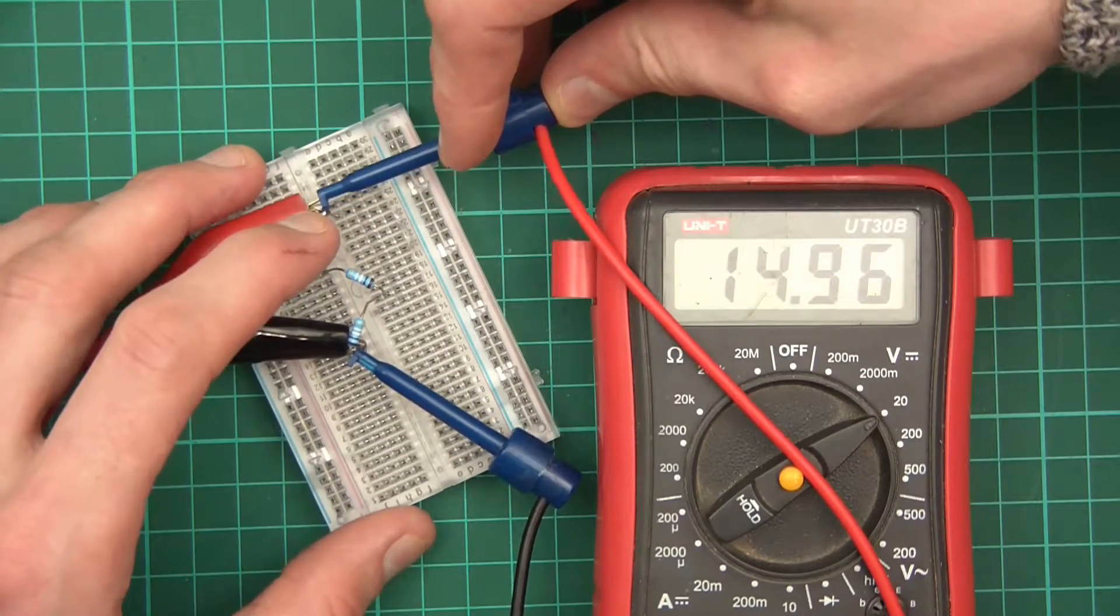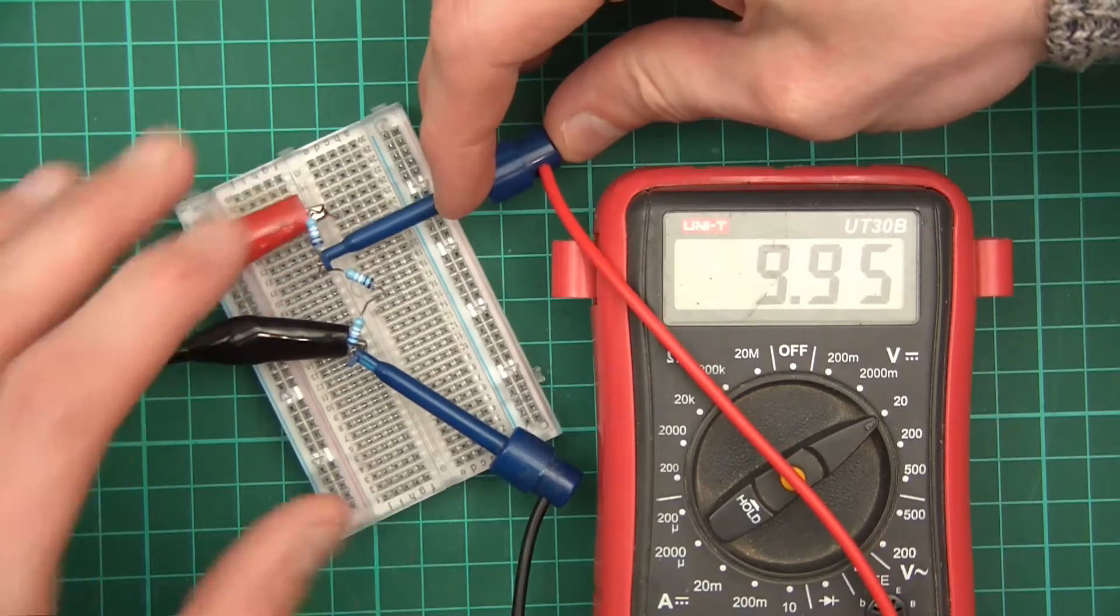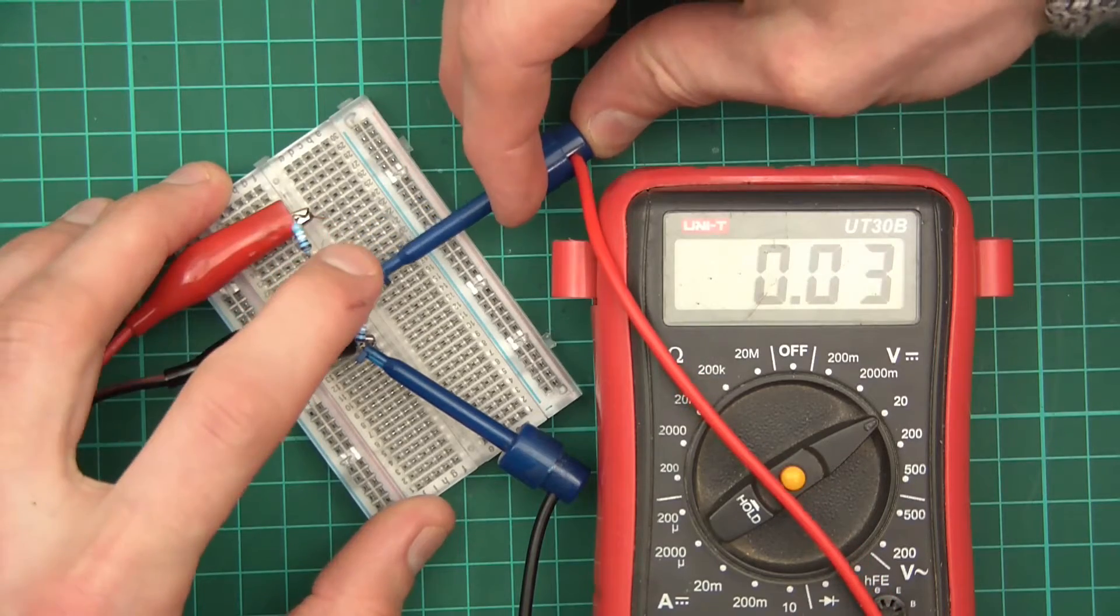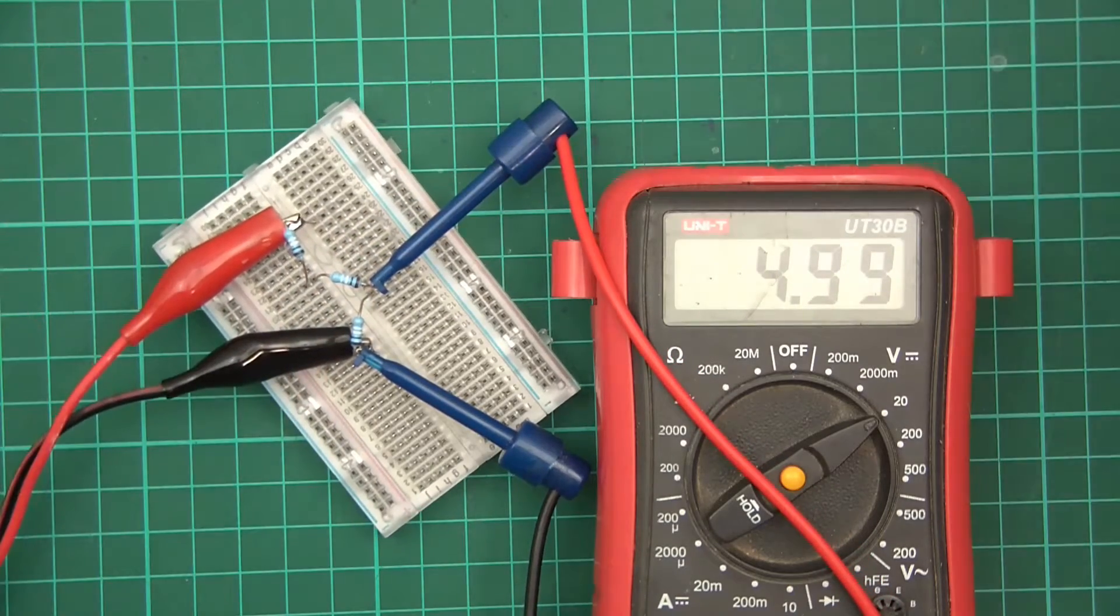Now, if I put it on the next one, what should we get? We should get 10 volts. Like that. Yeah, correct. Now, if we do it again, we will have 5 volts. Like that. Perfect.